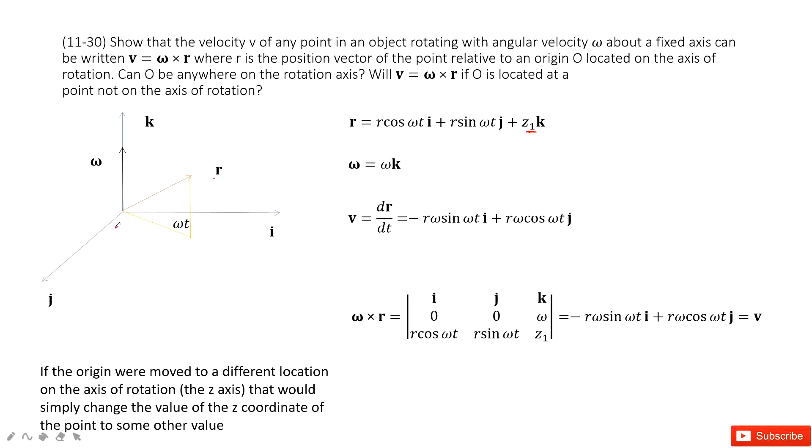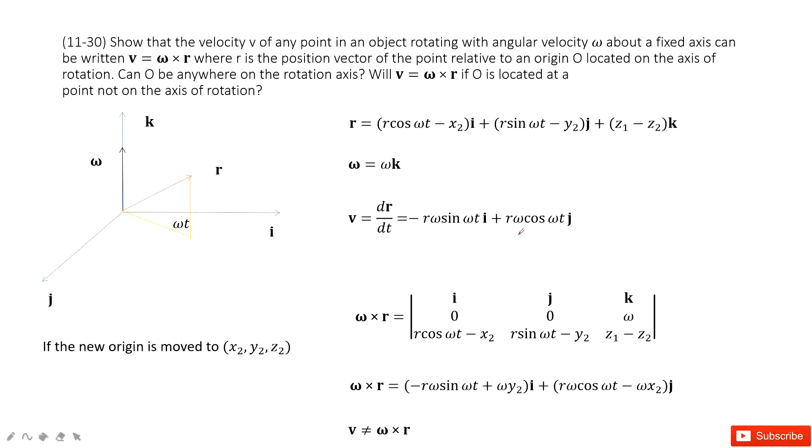Because this one moves up, down, up, down, it only affects the z component. So this time we consider it becomes z₁ as the k component. Everything is the same. When we do the cross product calculations, we still get the same answer as the velocity V. So it doesn't change.